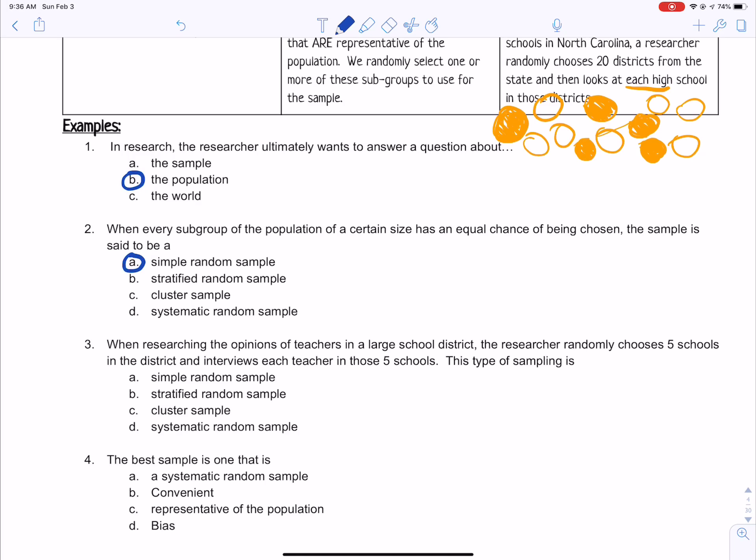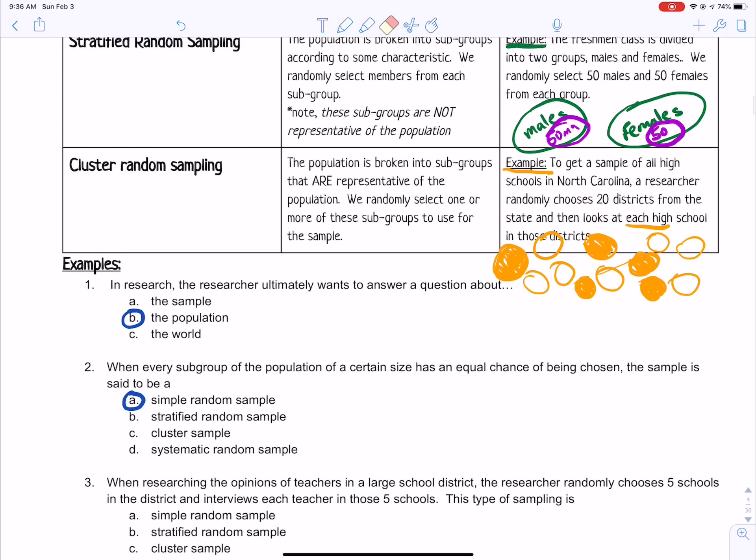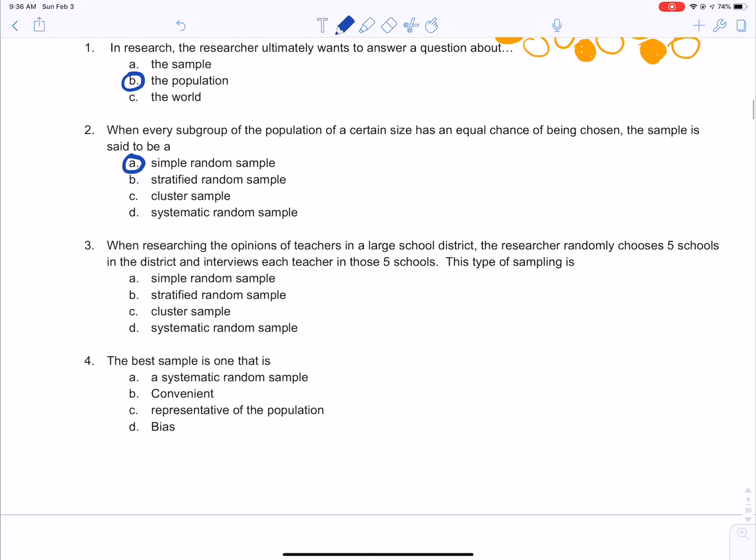When researching the opinions of teachers in a large school district, the researcher randomly chooses five schools in the district and interviews each teacher in those five schools. So that would be like this cluster example that we just looked at a minute ago. So they chose five schools, but then they selected every teacher to sample in those five schools. So that looks like a cluster sample.